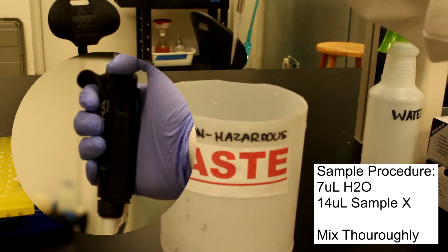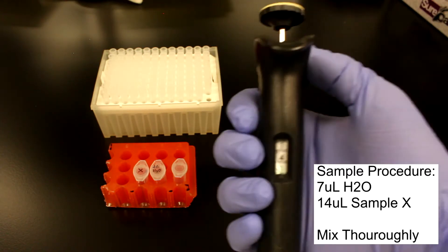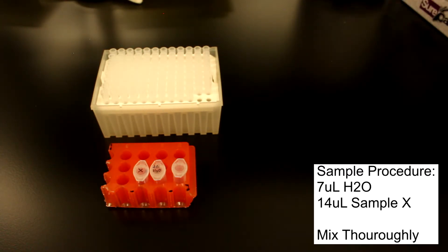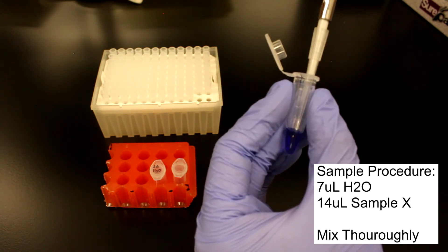The tip is then ejected from the pipette into a waste bit. The example procedure then requires 14 microliters of sample X. 14 microliters of sample X is transferred into the mixing vial using the same method.